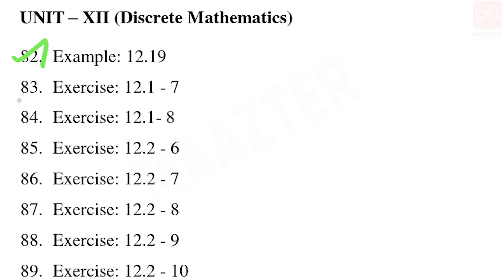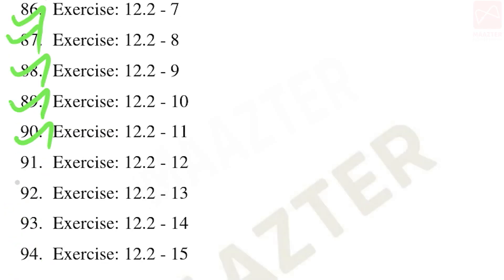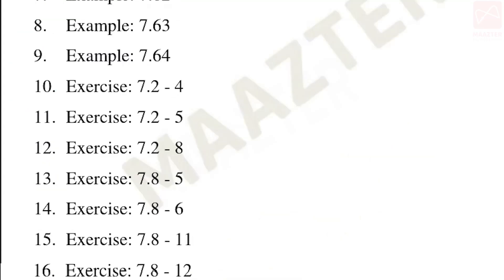Unit 12 exercises: exercise 12.1 — seventh and eighth sums. Exercise 12.2 — sixth, seventh, eighth, ninth, tenth, eleventh, twelfth, thirteenth, fourteenth, and fifteenth sums. These complete the three-mark questions.